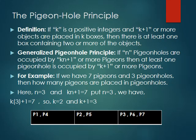The Generalized Pigeonhole Principle states: if n pigeonholes are occupied by kn plus one or more pigeons, then at least one pigeonhole is occupied by k plus one or more pigeons — meaning one box will have more than one pigeon.